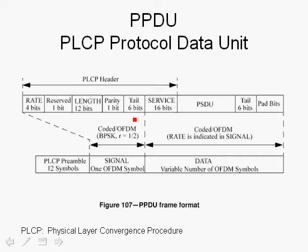The reason the tail bits are added to the PLCP header is that the receiver has to decode the PLCP header and extract the rate and length of the packet. The rate especially has to be known by the receiver in order to decode the remaining OFDM symbols. The PLCP header also includes 16 bits called the service bits, which follow the signal field itself.